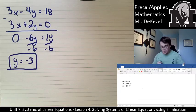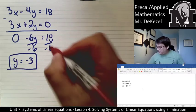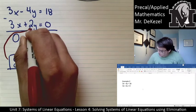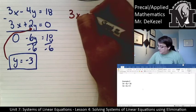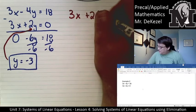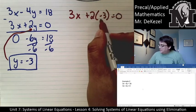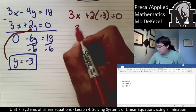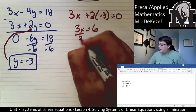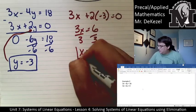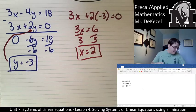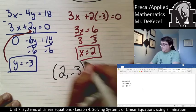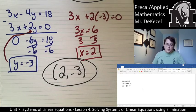We are half done. We take y = −3 and plug it into the equation that equals 0: 3x + 2(−3) = 0, so 3x − 6 = 0, add 6 to both sides, 3x = 6, divide both sides by 3, x = 2. Our solution is (2, −3).